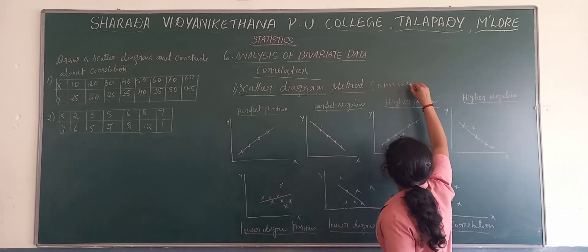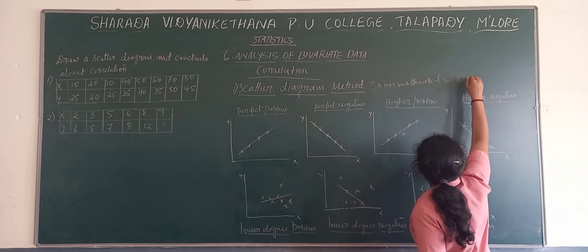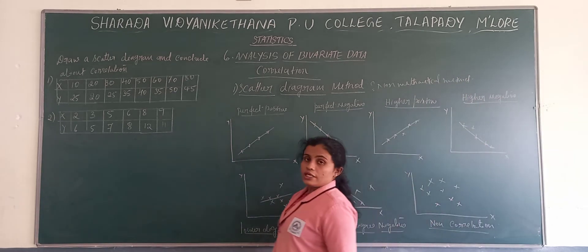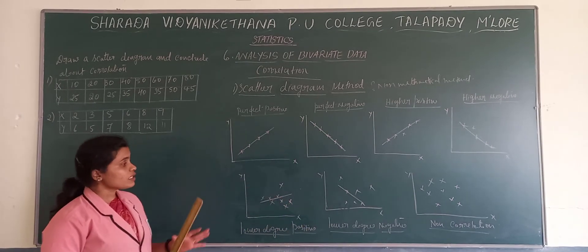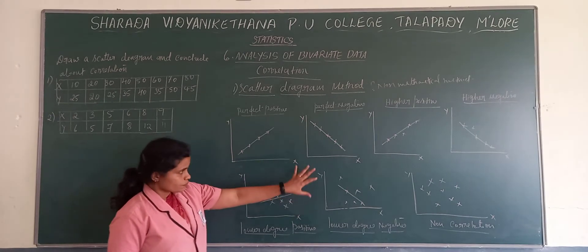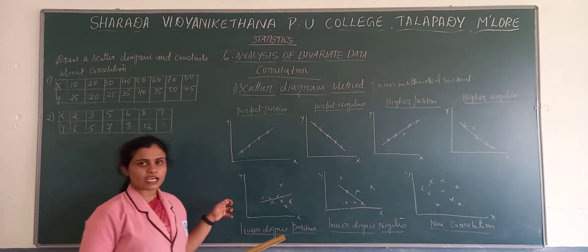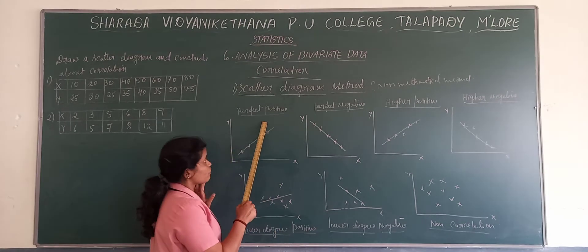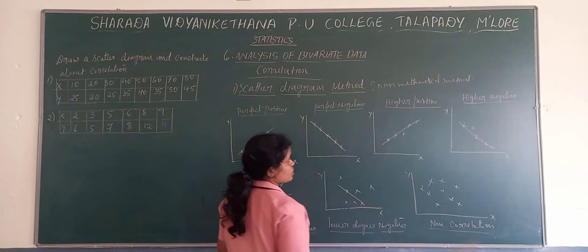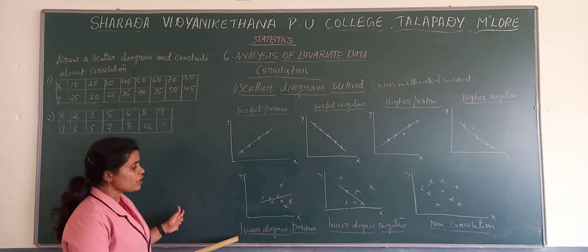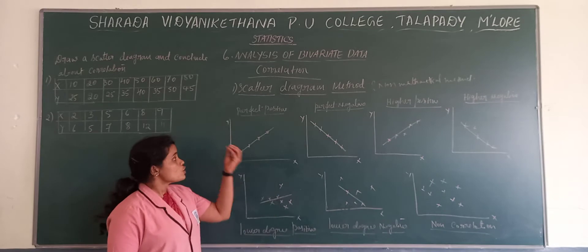In the scatter diagram method, we have different kinds of scatter diagrams. When we observe how the values are scattered, we see various types: perfect positive, perfect negative correlation, higher positive correlation, higher negative correlation, lower degree positive correlation, lower degree negative correlation, and no correlation.